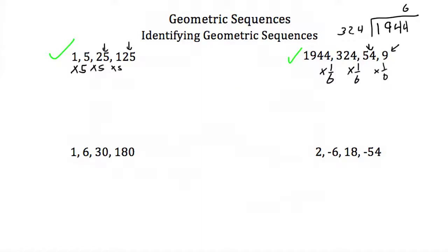Let's look at our next example. We have 1, 6, 30, and 180. Well to get from 1 to 6, I would have to multiply by 6. If I multiply 6 by 6 again, I'll get 36. But we have 30 as the next number in our sequence. So this one is not a geometric sequence.